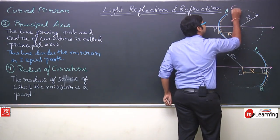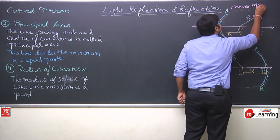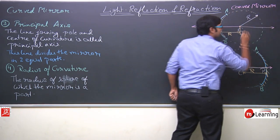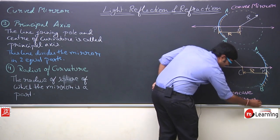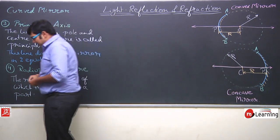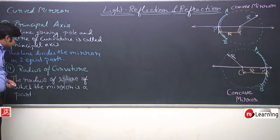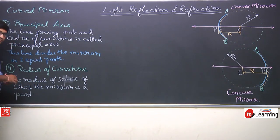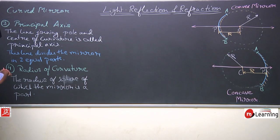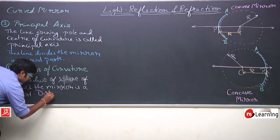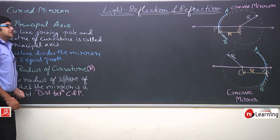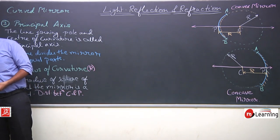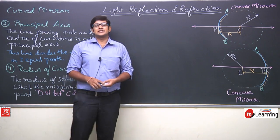So, the definition of radius of curvature: it is also the distance between C and P, and it is denoted by capital R. This is the definition of radius of curvature.